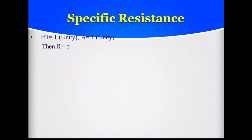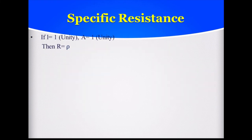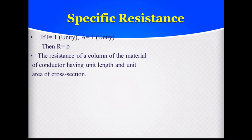If we consider the length of the wire to be unity (1) and the area of cross-section to be 1, then R = ρ. So resistance equals specific resistance. The definition of specific resistance is: the resistance of a column of a conductor having unit length and unit area of cross-section.